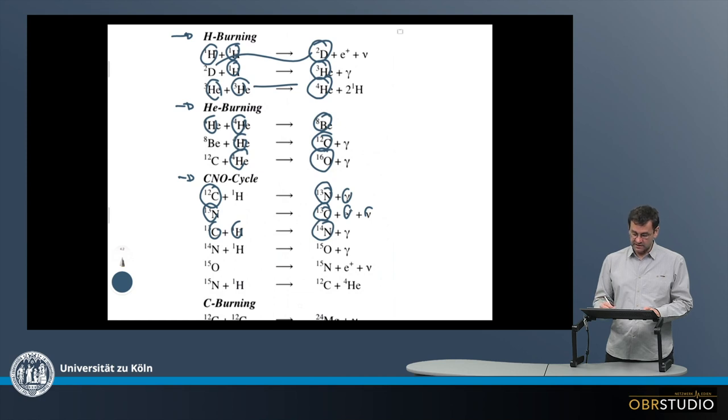So then the nitrogen is used to form carbon, which is used together with hydrogen to form nitrogen-14. In this case, this is then used to form oxygen, which is used to form nitrogen-15. And then this nitrogen-15 here together with hydrogen again produces carbon-12 together with helium.